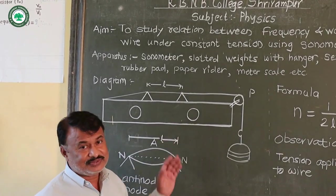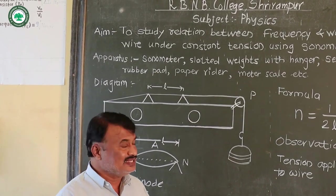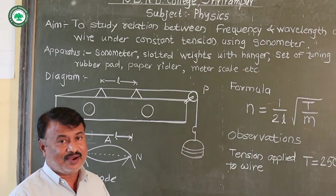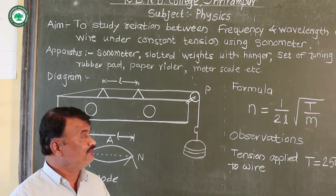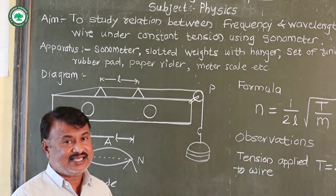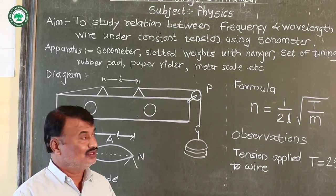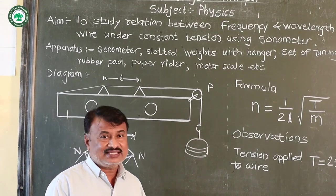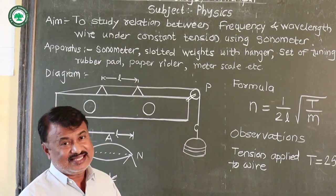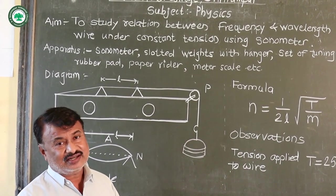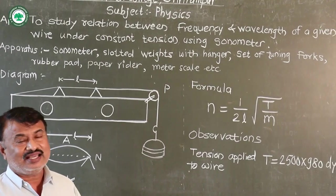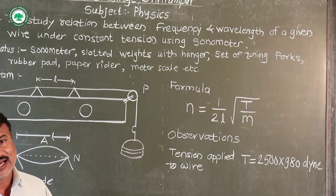The formula for this experiment is n = 1/(2l) × √(T/m), where n is the frequency, l is the vibrating length between the two bridges, T is the tension in the wire, and m is the mass per unit length of the wire.